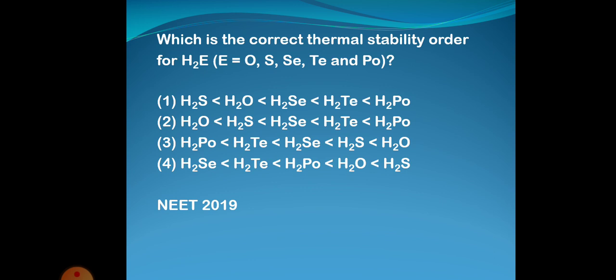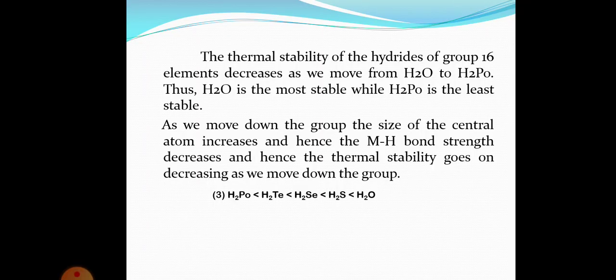The thermal stability of hydrides of group 16 elements decreases as we move from H₂O to H₂Po — that is, from oxygen to polonium as we move down the group. So H₂O is the most stable and H₂Po is the least stable. The reason is that as we move down the group, the size of the central atom increases.